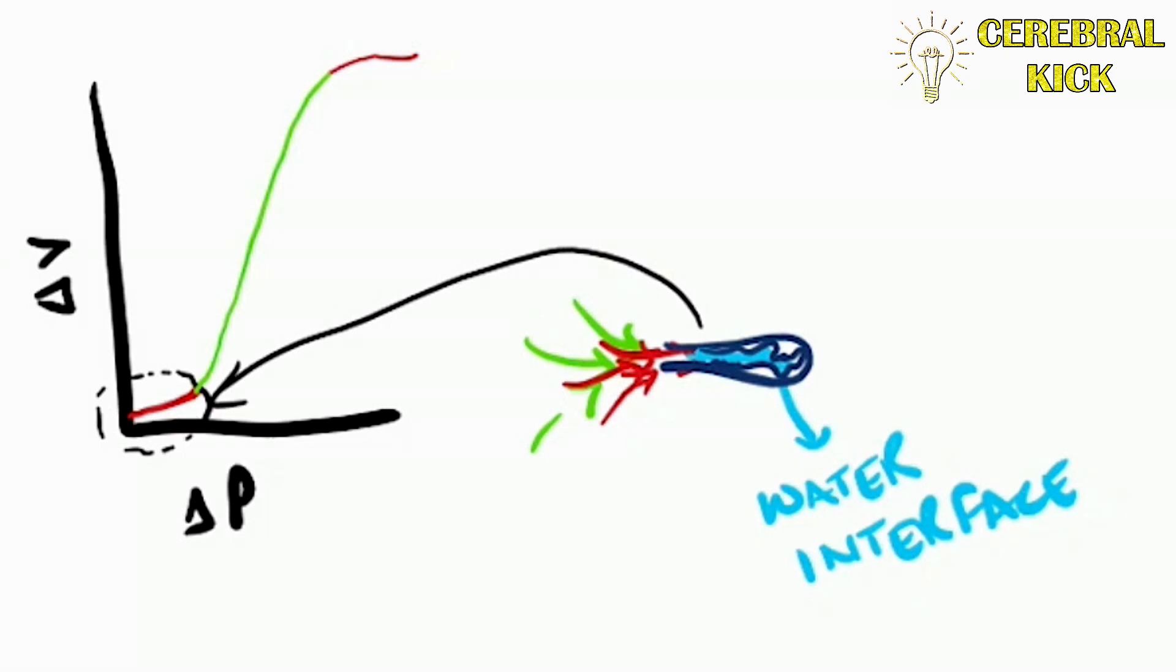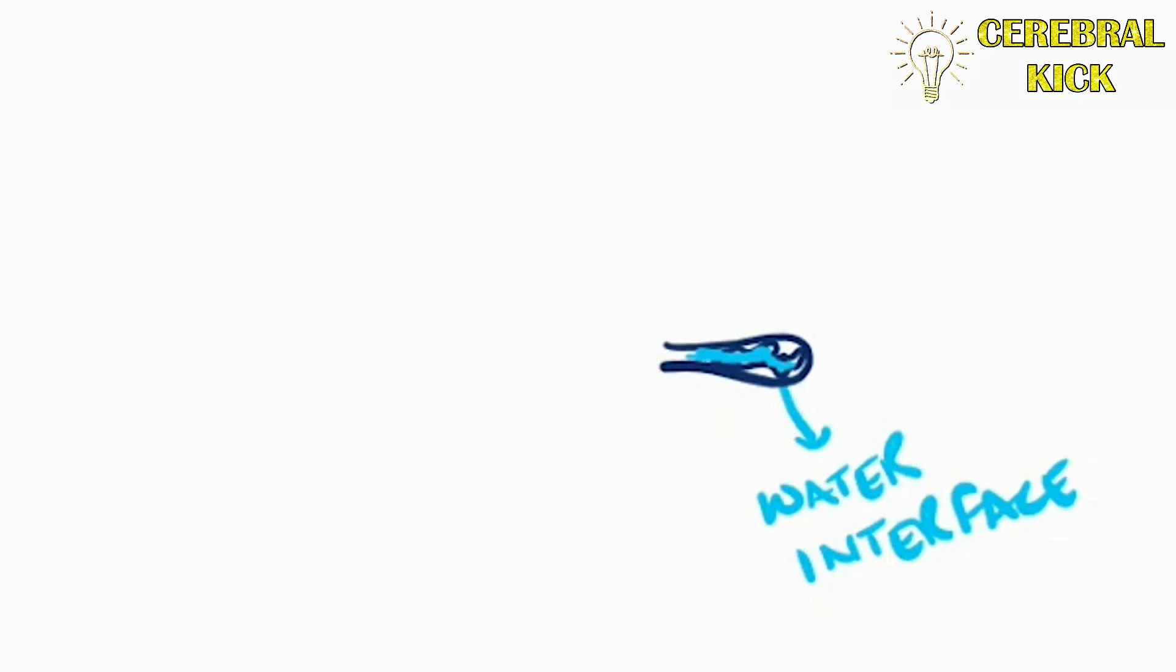Don't go for the graph right now. My point is that the compliance would be low at this point and the elastance would be high. So it would require a greater pressure to re-expand this alveolus.